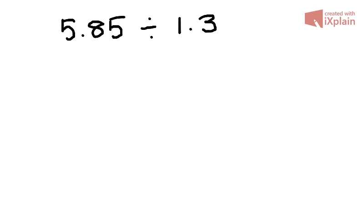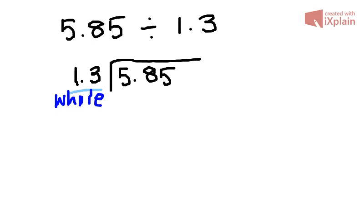So what we do is we set up our division as 5.85, very spaciously, divided by 1.3. Now, hard to work with this algorithm and have this decimal number out here. So what we try to do is we always want to have a whole number here on the outside.